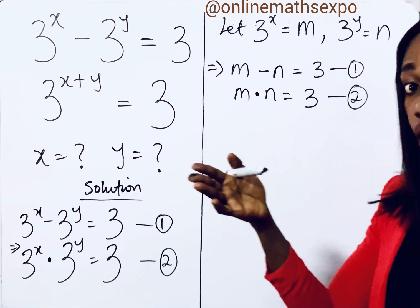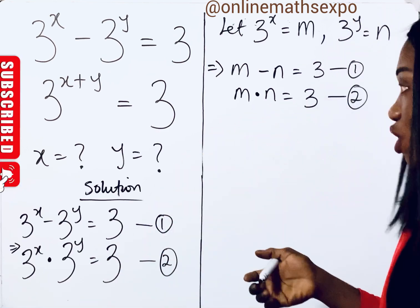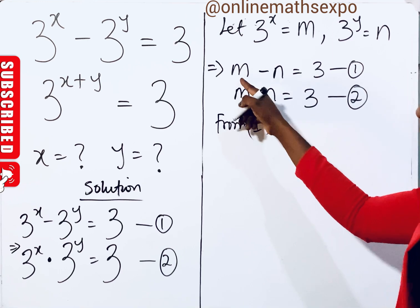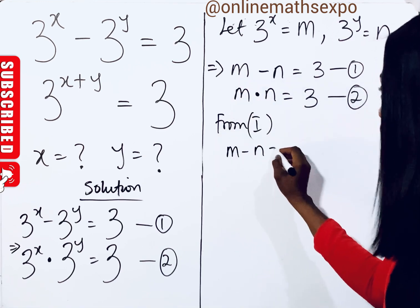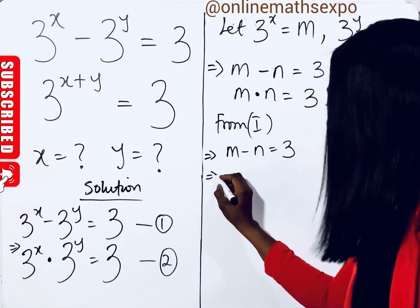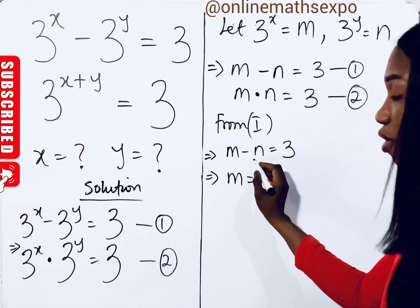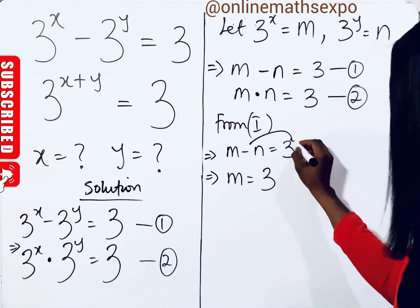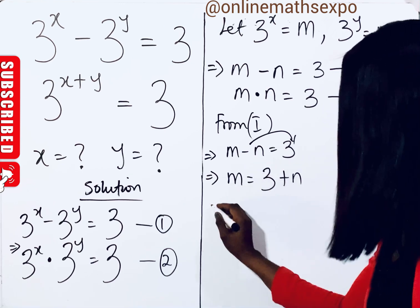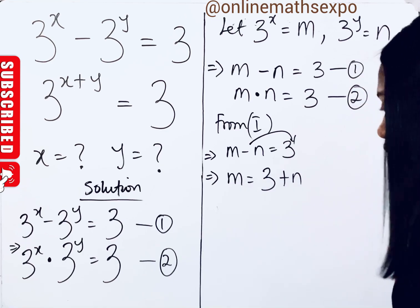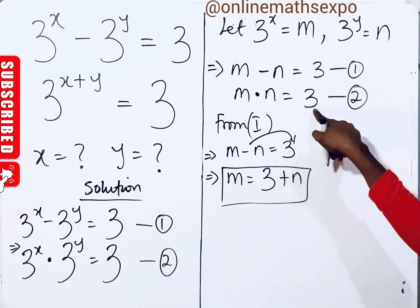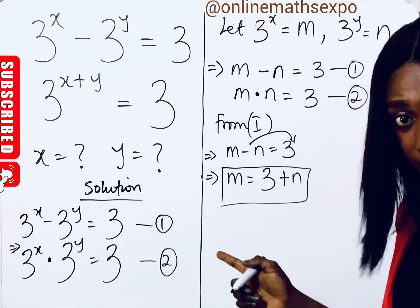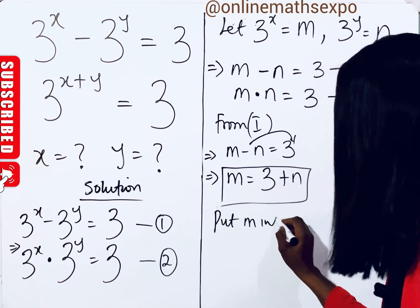We are going to use the substitution method for solving this system of equations. From equation 1, make m the subject: m minus n equals 3, so m equals 3 plus n. Now we put this expression for m back into equation 2.